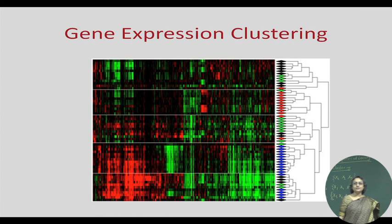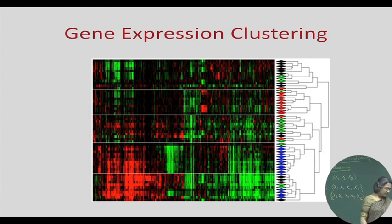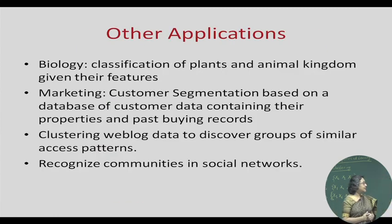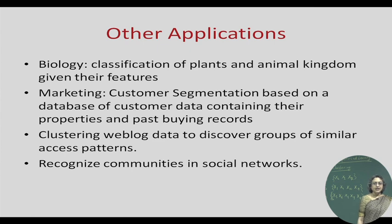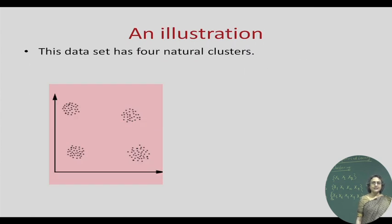Another example is clustering of gene expression data, where genes are clustered based on their gene expression. Other applications include: in biology, the classification of the plant and animal kingdom given their features; in marketing, customer segmentation based on a database of customer properties and past buying records — useful for deciding what type of promotions to target to each customer; clustering of web log data to discover groups of similar access patterns; and recognizing communities in social networks based on their similarities.